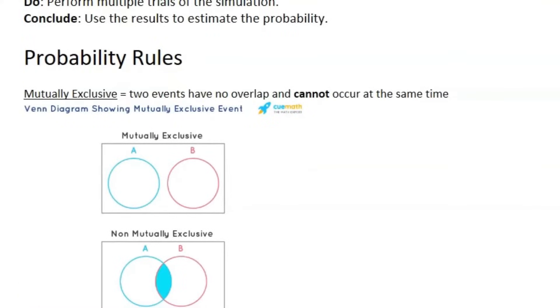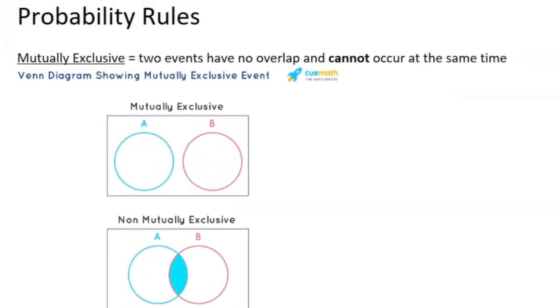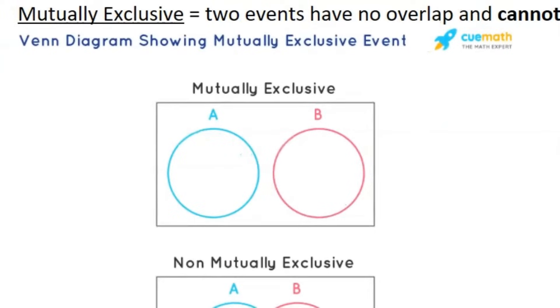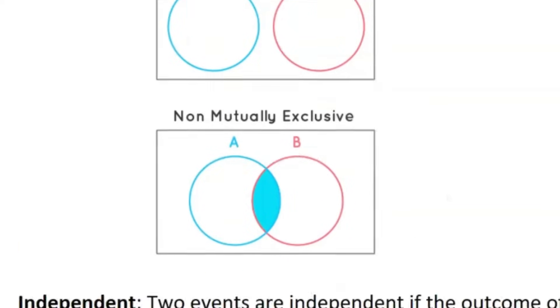Now we're going to talk about probability rules. To talk about probability rules, we first need to get a couple definitions out of the way. The first one is mutually exclusive. Two events have no overlap and cannot occur at the same time is the definition for a mutually exclusive occurrence. You can see here, this is a nice diagram of event A and event B. They're mutually exclusive because there's no overlap. They cannot occur at the same time. But if they're not mutually exclusive, they can occur at the same time. That's why there's the overlap in the event diagram.